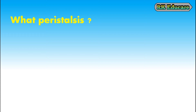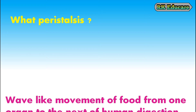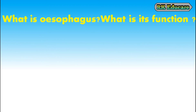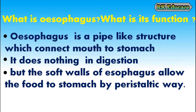What is peristalsis? The wave-like movement of food from one organ to the next of human digestion is called peristalsis. What is esophagus and what is its function? Esophagus is a pipe-like structure which connects the mouth and stomach. It does nothing in digestion, but the soft walls of the esophagus allow the food to pass to the stomach by peristaltic movement.